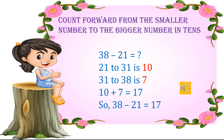Strategy 3: count forward from the smaller number to the bigger number in steps. For example, 38 minus 21. As the strategy says, we are going to count forward from the smaller number 21 to the bigger number 31 in steps. From 21 to 31, we need to count 22, 23, 24, 25, 26, 27, 28, 29, 30, 31 — and we get 10. So from 21 to 31, we have a difference of 10.